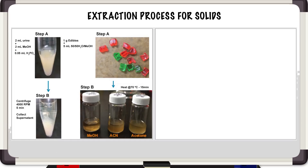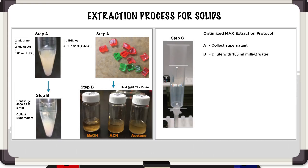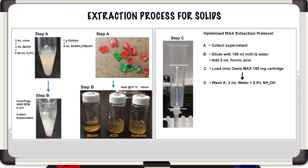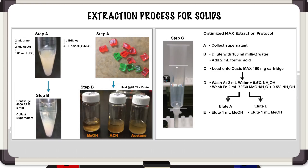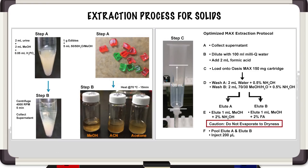Once we homogenize the gummy bears and get them into a liquid format, we collect the supernatant, dilute it with about 100 mL of Millipore water, add 2 mL of formic acid, and then load that onto our solid phase extraction cartridge — in this application, the MAX 150 mg cartridge. We then perform two wash steps: first with 2 mL of water with 0.5% ammonium hydroxide, then with 2 mL of a percentage of methanol in water with 0.5% ammonium hydroxide. We elute with either 1 mL of methanol with 2% ammonium hydroxide or 1 mL of methanol with 2% formic acid. Because we're using multi-dimensional chromatography, there's no need to evaporate our sample — we can take it right on to the instrument.